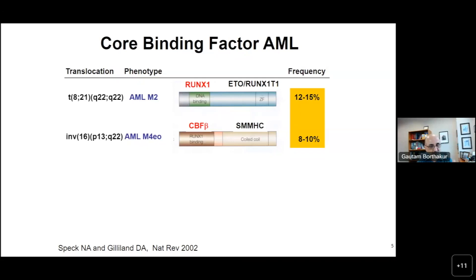The decisions are not so easy for core binding factor AML or NPM1 mutated AML. Core binding factor AML mostly involves two translocations: translocation t(8;21), which involves RUNX1 and RUNX1T1, and inversion 16, where inversion brings core binding factor beta into close proximity with smooth muscle myosin heavy chain. The total incidence is about 15 to 20 percent of all new AMLs.